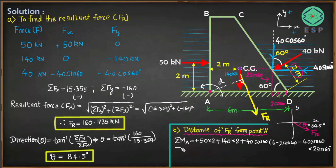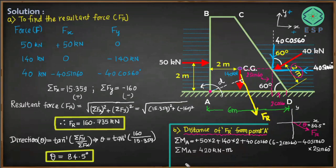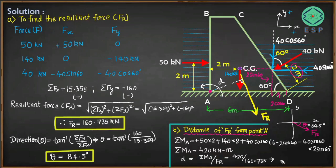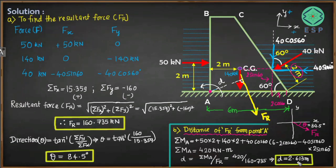Summing all moments about point A gives ΣMA = 420 kN·m. The distance of the resultant force from point A is d = ΣMA / FR = 420 / 160.735 = 2.613 meters. So the resultant force FR = 160.735 kN acts at 84.5° from horizontal and intersects the base AD at 2.613 meters from point A.